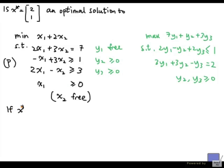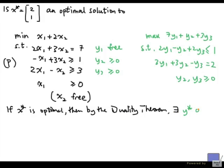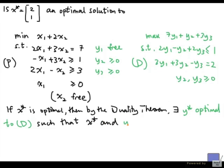If x star is optimal, then by the duality theorem, there exists y star optimal to d. So d is my dual problem such that they have to satisfy the complementary slackness conditions together. x star and y star satisfy the complementary slackness conditions.